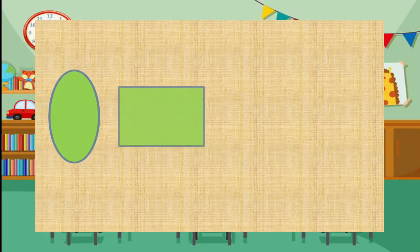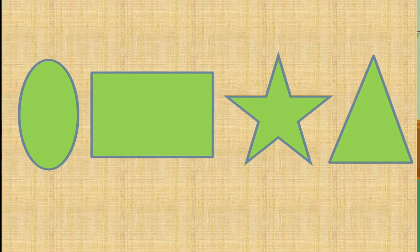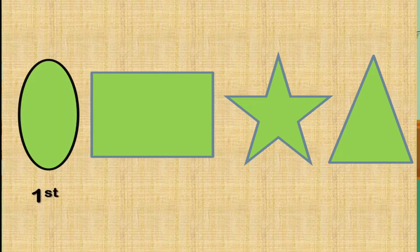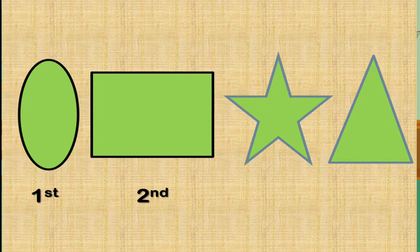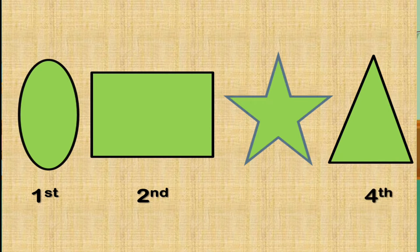Okay children, let us look at the shapes. If we are going to rank the following shapes, what will be the first one? The first one will be an oval — the oblong is our first shape. What will be the position of the rectangle? The position of the rectangle is second. What shape will be on the fourth round? It must be a triangle. What is the rank of the star? The rank of a star is third.